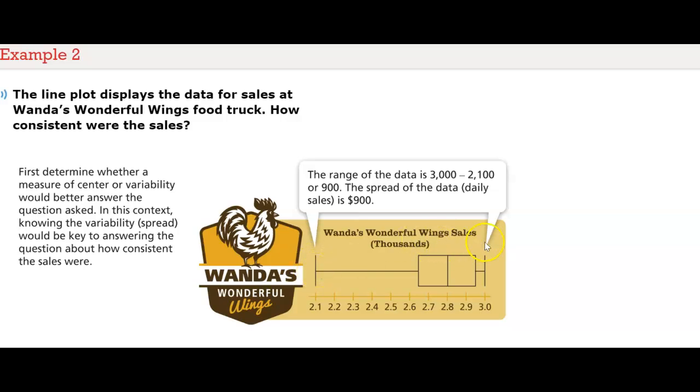Here to here, that's your lowest amount of data. This is your greatest amount of data. The range of the sales at Wanda's Wonderful Wings would be 2,100. That's what the 2.1 represents. And here at 3.0, which represents 3,000. We take the range. That's 3,000 minus the 2,100. And that gives us 900. So the spread of the data from here to here is $900.